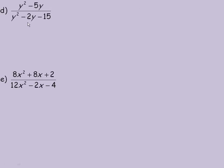Once again I would want to write both of these in their completely factored form. I would look at the top and say there's a common factor of y in y squared and negative 5y. So I could factor a y out of the numerator — it'd be y times y minus 5.